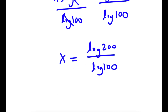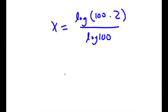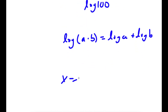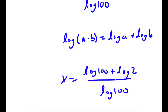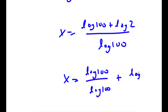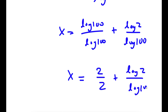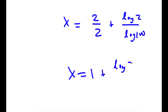Now, log 200 is the same thing as log of 100 times 2, and I have this over log 100. So now if I have something in the form log of a times b, this is equal to log a plus log b. So log 100 times 2 is going to equal log 100 plus log 2. So now I have log 100 over log 100 plus log 2 over log 100, which equals 1 plus log 2 over 2.